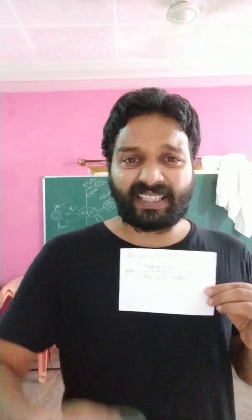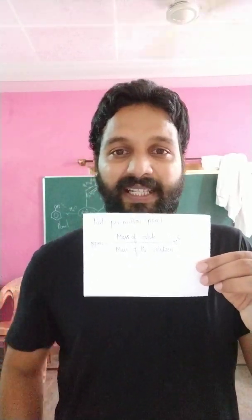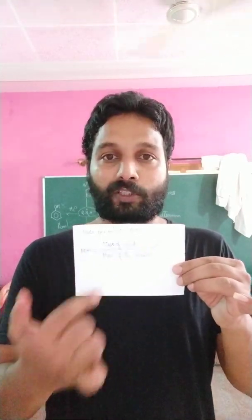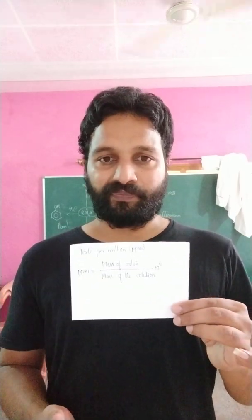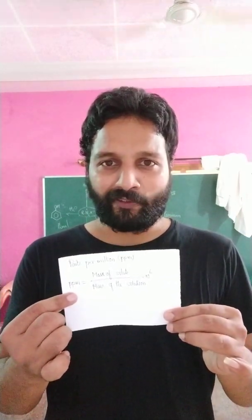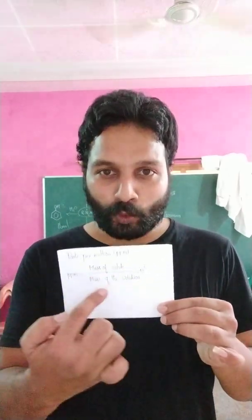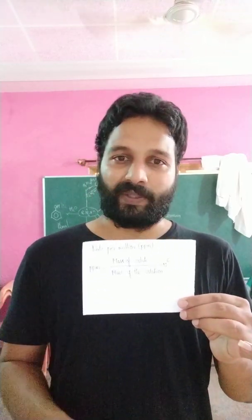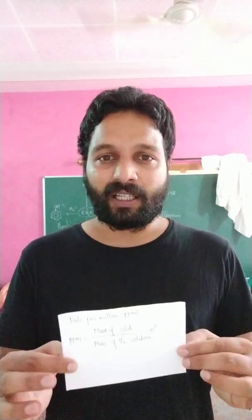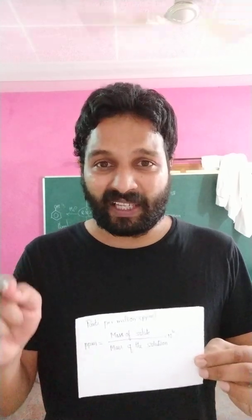The fourth concentration term is parts per million. A million is 10 lakhs. If we split this solution into 10 lakh parts, the part that is the added solute — sugar — is considered with respect to mass. Parts per million is the ratio of number of parts by mass of the solute to 1 million parts by mass of the solution. This concentration term is used when the solute is added to the solvent in very, very small quantity.